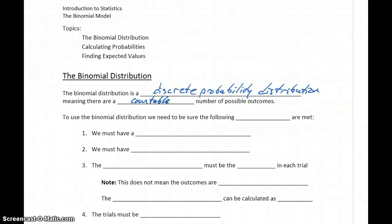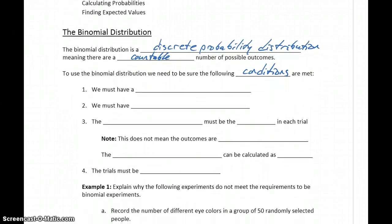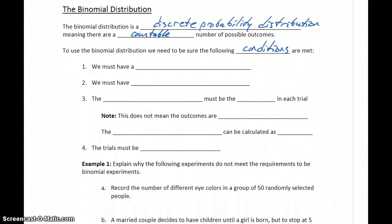So whenever we use the binomial distribution, we need to be sure some specific conditions are met. Otherwise, we're using the wrong approach and coming up with incorrect results. For the binomial distribution to apply, we need to have a fixed number of trials.